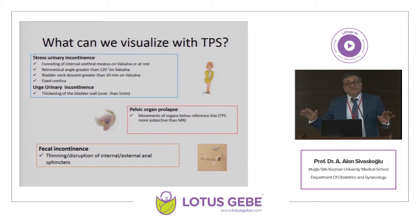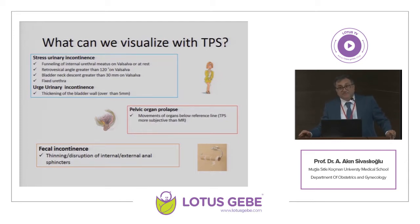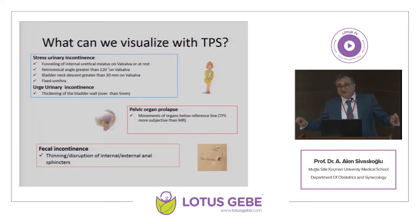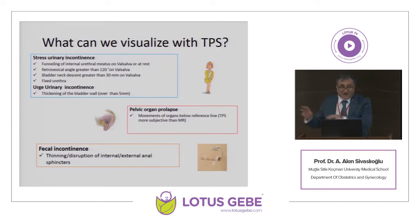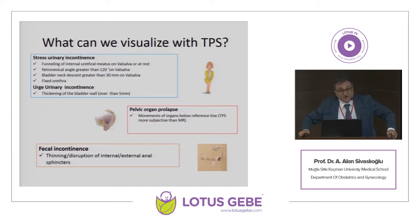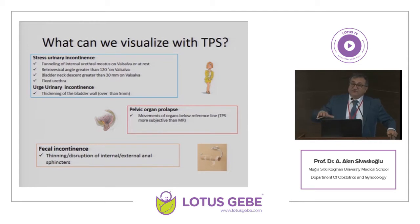These parameters have a high proportionate accordance with the problem but no direct correlation. Regarding urge incontinence, thickening of the bladder wall over 5 millimeters is well correlated with urinary incontinence. However, according to the integral theory, the mechanism and treatment of urinary incontinence differs from what the ICS or IUGA propose. There are two paradigms — the integral theory and the ICS/IUGA approach — and they define urinary incontinence and its relationship to prolapse differently.